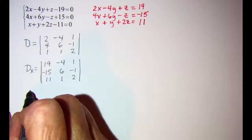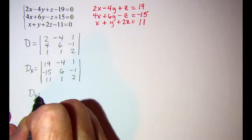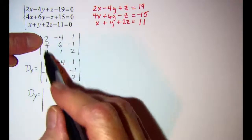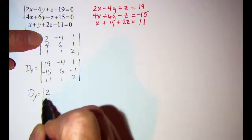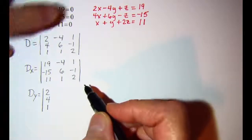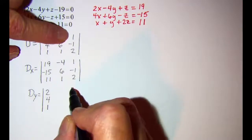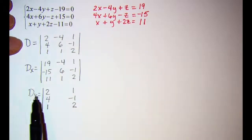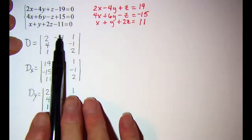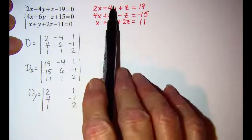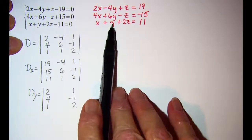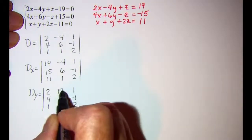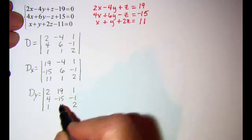For determinant sub y, I'm going to copy the first column and the last column from determinant D. For determinant sub y, I'm going to replace the second column — the y column — with the constants: 19, negative 15, and 11.